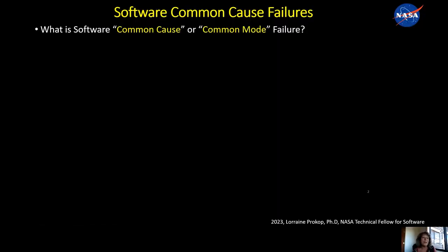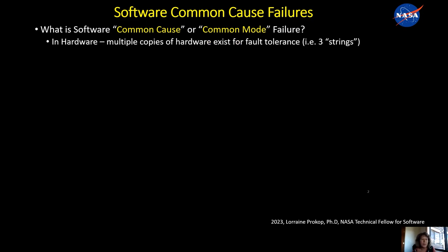What is a software common cause — also known as common mode — failure? In hardware, you can draw an analogy: multiple copies of that hardware are usually used to provide some redundancy. In aerospace, they call those 'strings.'